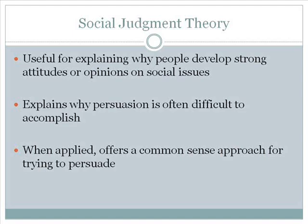Social judgment theory is a persuasion theory proposed by Musifer Sharif and Karl Hovland. It is useful for explaining why people develop strong attitudes or opinions on social issues. It also explains why persuasion is often difficult to accomplish, and it offers a common sense approach for trying to persuade in the real world.